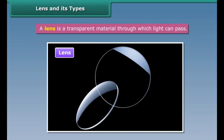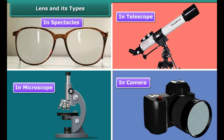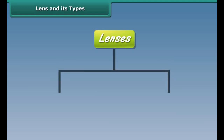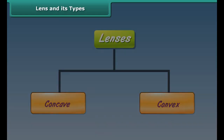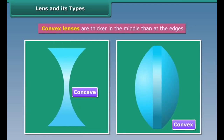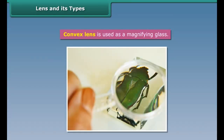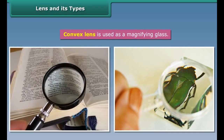Lens and its types. A lens is a transparent material through which light can pass. Lenses are widely used in spectacles, telescopes, microscopes, and cameras. There are two types of lenses: concave and convex. Concave lenses are thinner in the middle than at the edges, whereas convex lenses are thicker in the middle than at the edges. A magnifying glass, used to observe body parts of an insect or read small print, is convex in shape. Hence, a convex lens is used as a magnifying glass.